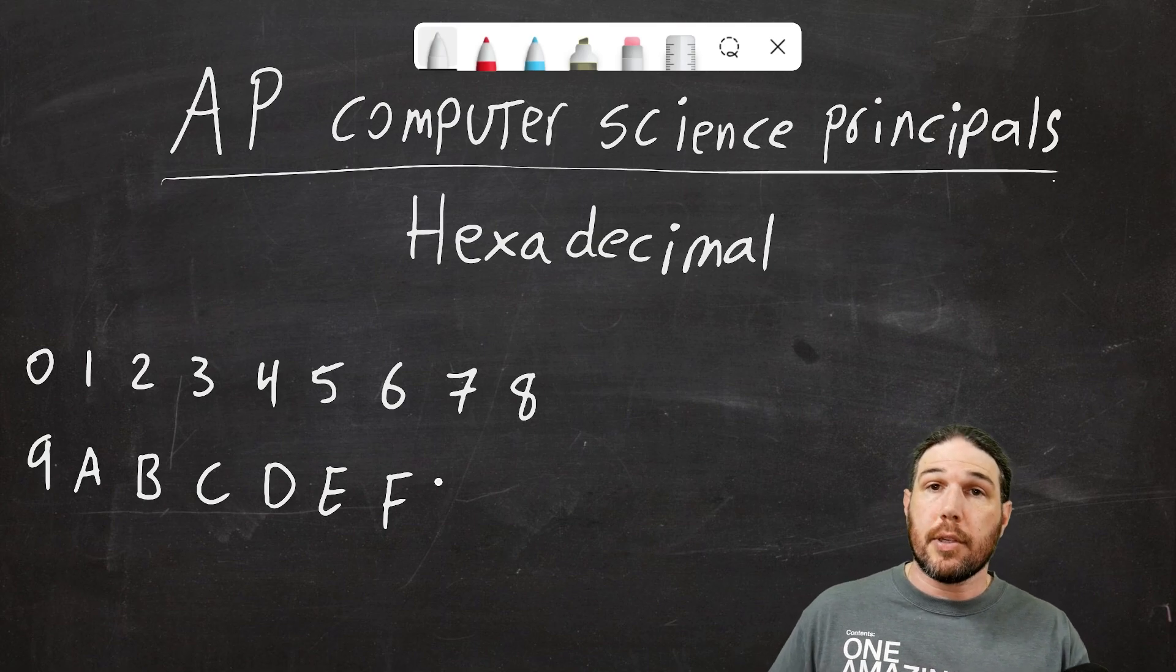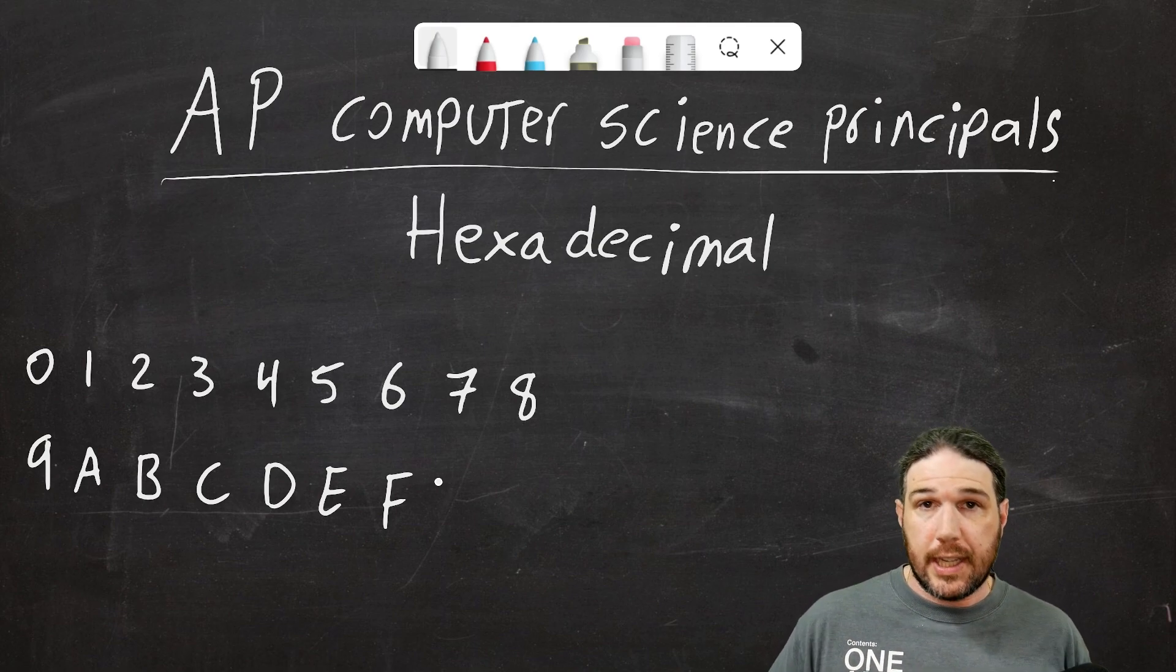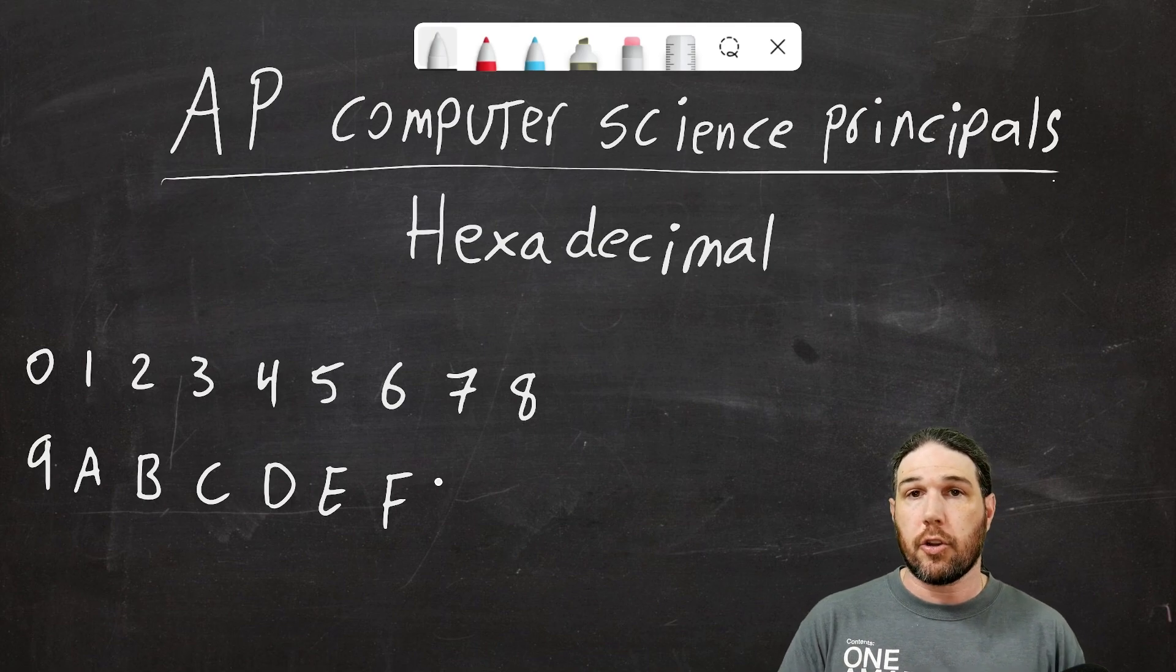We need 16 symbols, so the highest number that we can make with one hexadigit is 15. See my previous videos on binary and decimal if you need a refresher on why that works.